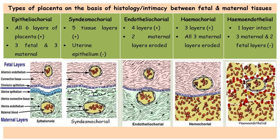Which kind of layers are present in the placenta? On the basis of histology, placentas are divided into five classes: epitheliochorial, syndesmochorial, endotheliochorial, hemochorial, and hemoendothelial. In the case of epitheliochorial, all six layers of the placenta — three from the fetal type and three from the maternal type — are present.